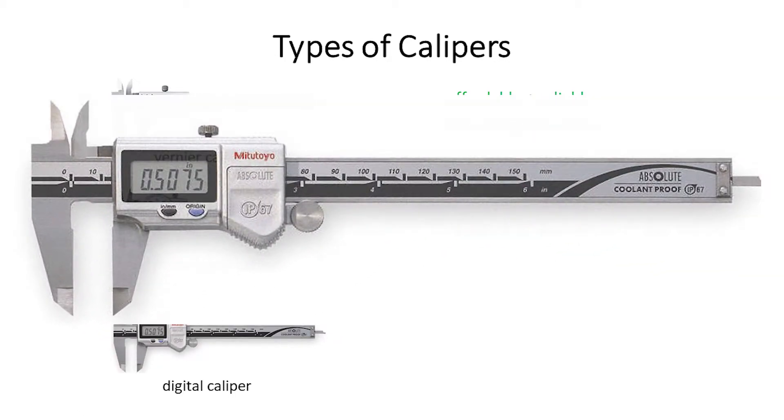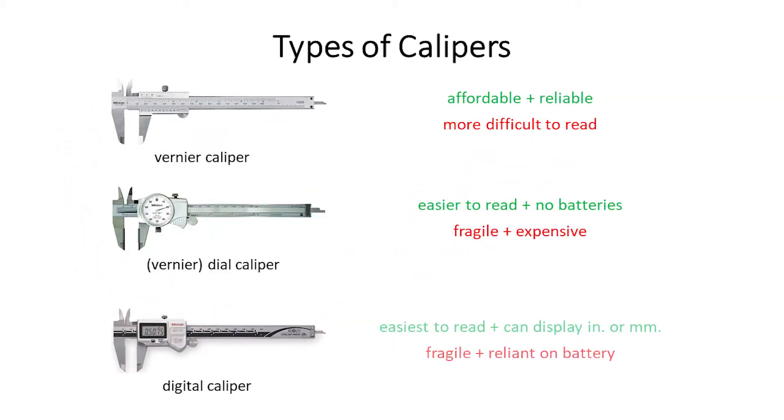The principal benefits to digital calipers are that they are the easiest to read among the three types, and they can display imperial or metric units and quickly convert back and forth between the two. The primary cons are that they are more fragile than Vernier calipers because of the electronics inside the instruments, and they are also reliant on a good battery to function.